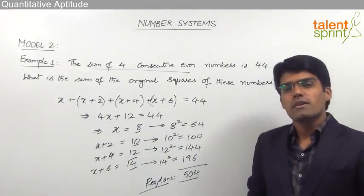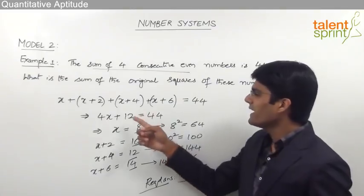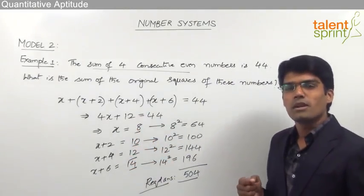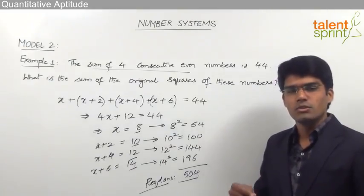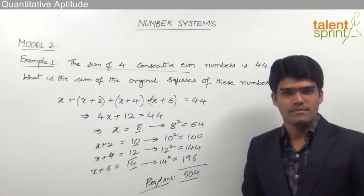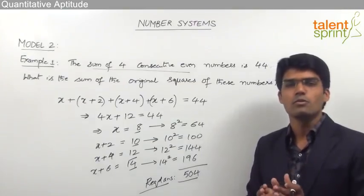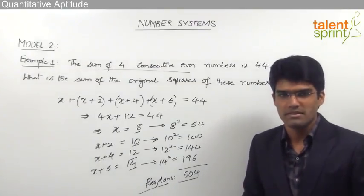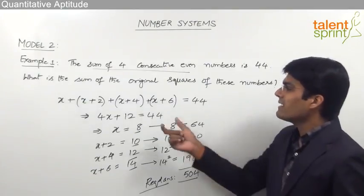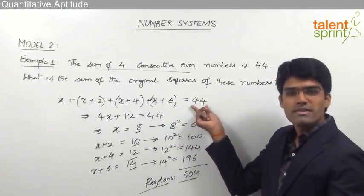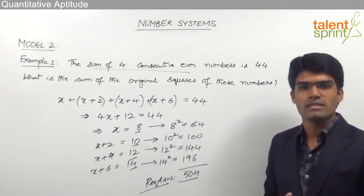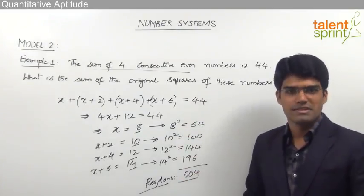One important point: instead of finding the four numbers this way, we can directly identify them as 8, 10, 12, and 14 without writing these steps, but for that we need to be clear with the concept of averages. Once averages is covered, you can easily determine the four numbers when the sum is 44. Since averages is not covered yet, let us go by the regular procedure.